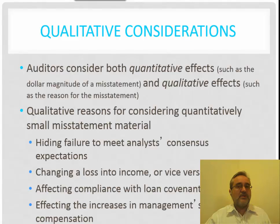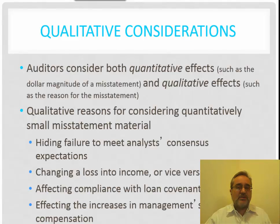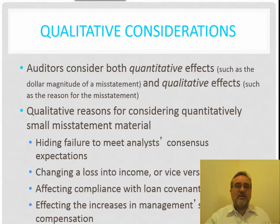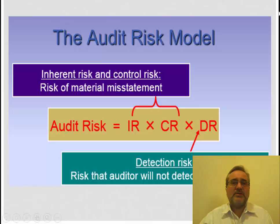When we consider these things, we certainly would not disregard them just because they're underneath our material misstatement threshold — we're not going to say they're irrelevant. We're considering these qualitative elements as we consider material misstatements. Let's now consider this from the perspective of the audit risk model.